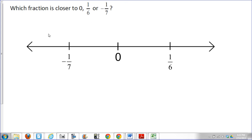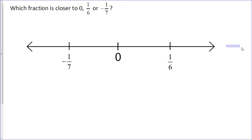Well, hopefully it's not news to you that one-sixth is on the right side of zero and that negative one-seventh is on the left side of zero, and we're zoomed in here on zero. One would be way out there somewhere and negative one would be way back there somewhere.